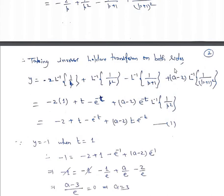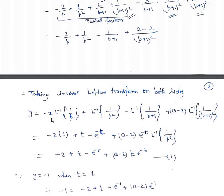Now taking inverse Laplace transform on both sides. We have y = -2·L⁻¹{1/p} + L⁻¹{1/p²} - L⁻¹{1/(p+1)} + (a-2)·L⁻¹{1/(p+1)²}. Applying the formulas: this equals -2(1) + t - e^(-t) + (a-2)·t·e^(-t).